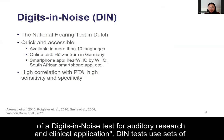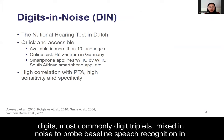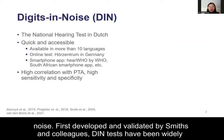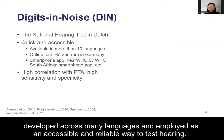DIN tests use sets of digits, most commonly digit triplets mixed in noise, to probe for baseline speech recognition in noise. First developed and validated by Smith and colleagues, DIN tests have been widely developed across many languages and employed as an accessible and reliable way to test hearing.